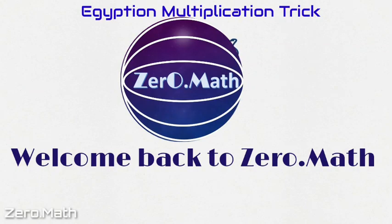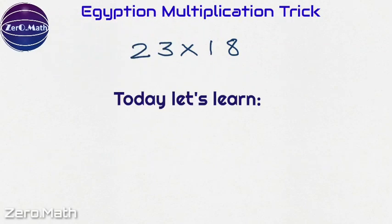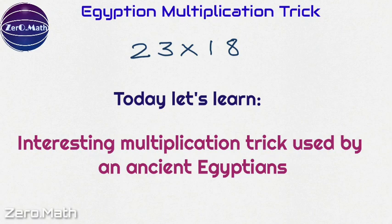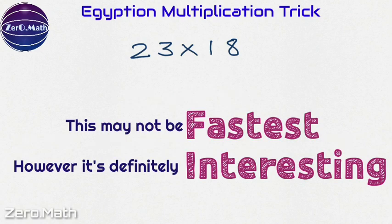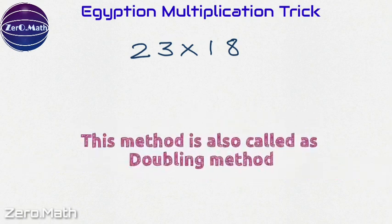Hello friends, welcome back to Zero Math. Today we are going to learn an interesting multiplication method used by ancient Egyptians. We can't claim that it is the fastest method, however it is definitely an interesting method to learn. This method is also called the doubling method.